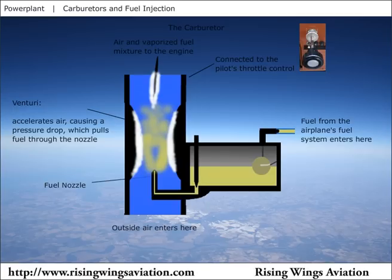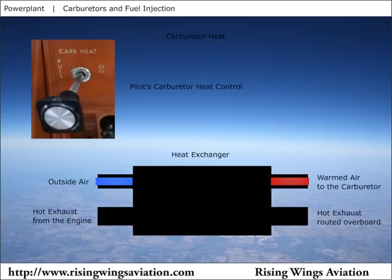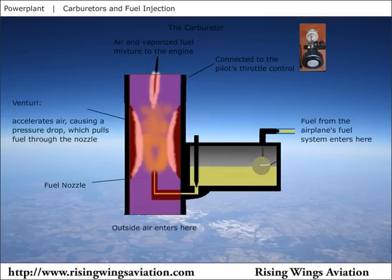A pilot can counteract the formation of carburetor ice through the use of carburetor heat. The carburetor heat control in the cockpit moves a valve which directs intake air through a small heat exchanger. The heat exchanger uses hot engine exhaust to warm the intake air. The use of carburetor heat will also cause an engine performance decrease, due to the air being thinned as a result of being heated. However, it must be used to counteract carburetor ice, since continued ice formation will further reduce engine performance.